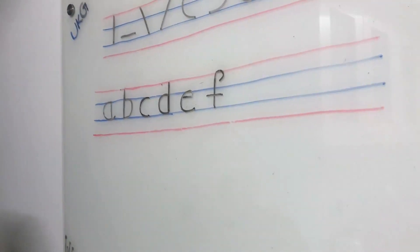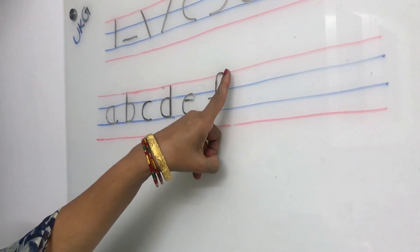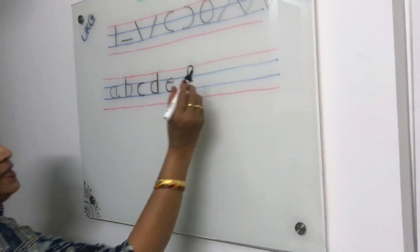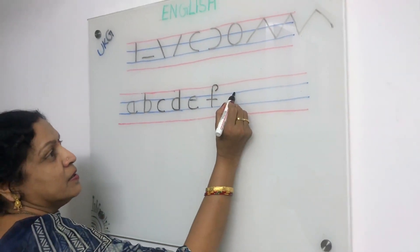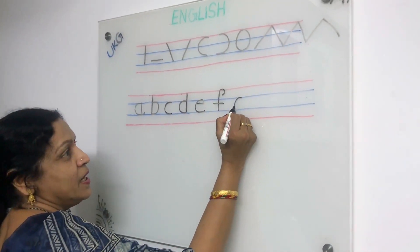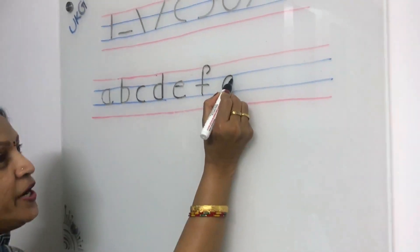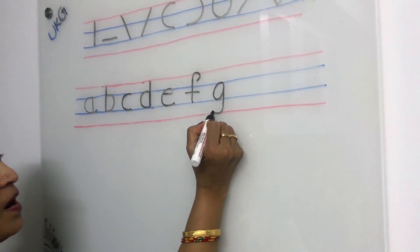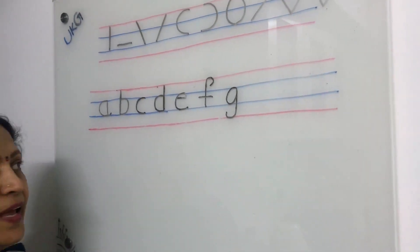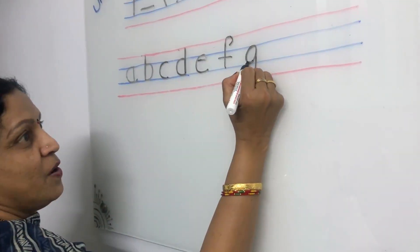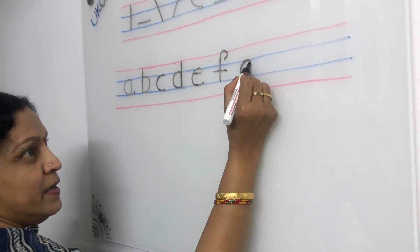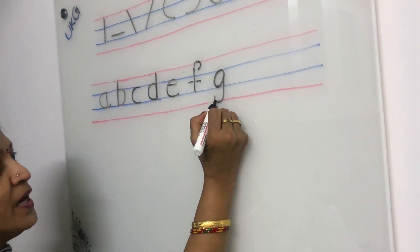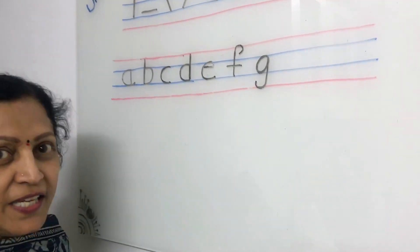Now give finger gap and write small G. Small circle joining standing line and small curve makes small G.